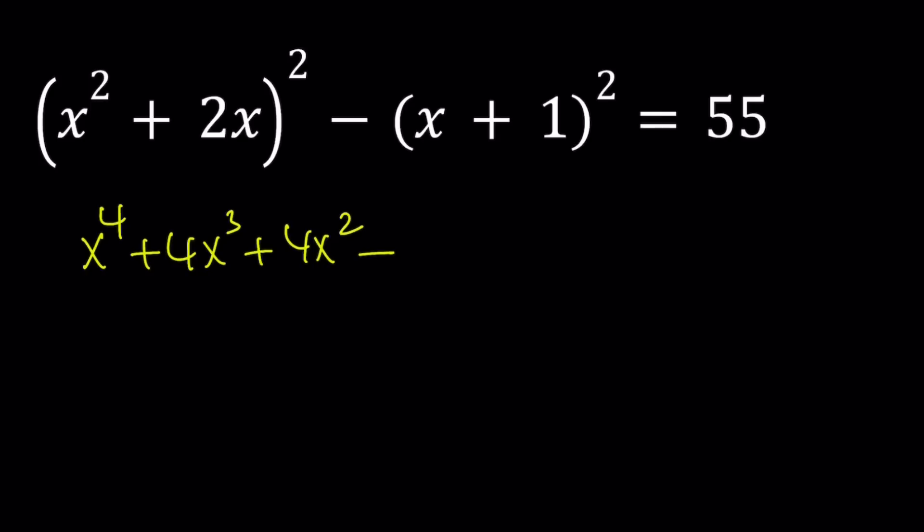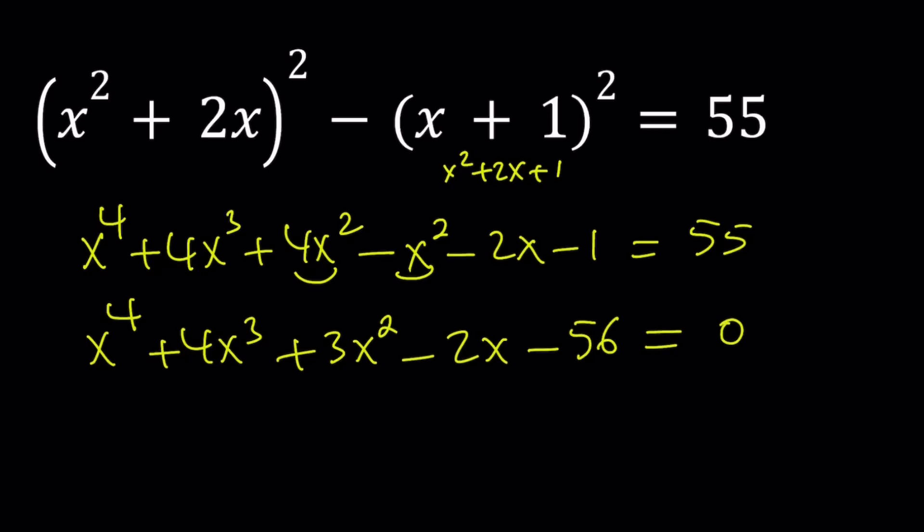if you subtract (x + 1)², which is x² + 2x + 1, from here, you're going to get x² - x² - 2x - 1 = 55. Let's go ahead and arrange these terms. We get x⁴ + 4x³ + 3x² - 2x - 1 - 55 gives us -56, and that equals 0.